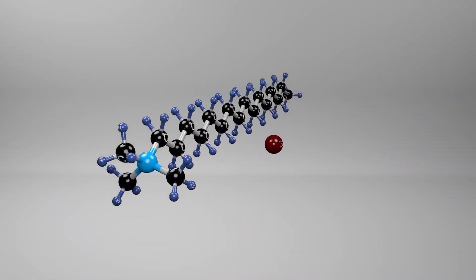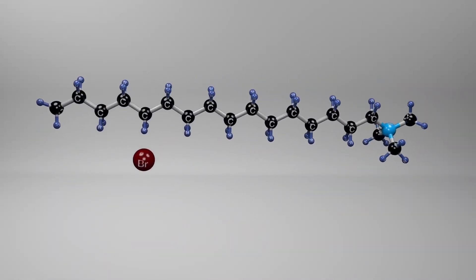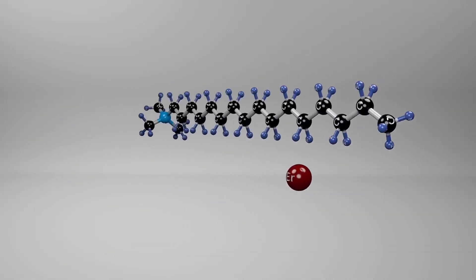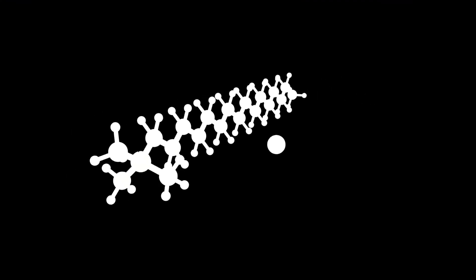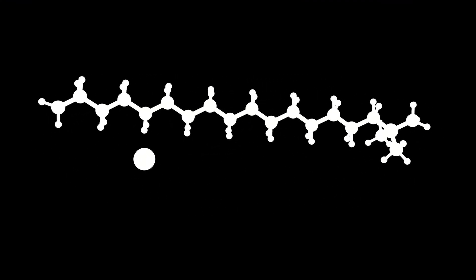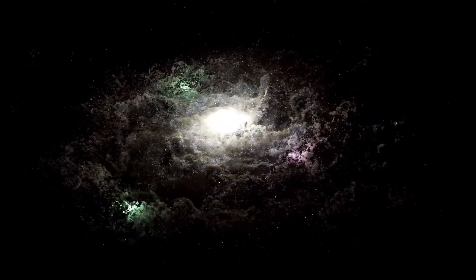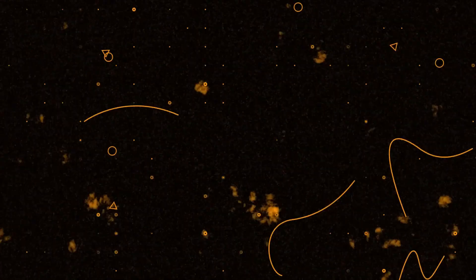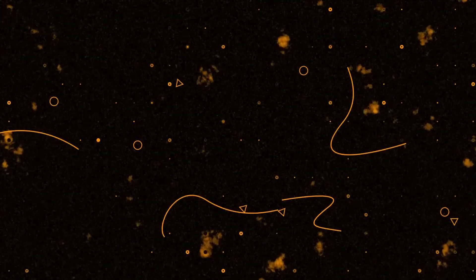Binding the universe together are cosmic filaments, enormous threads of gas, dust, and dark matter that stretch across billions of light-years. These filaments form a web-like structure that links galaxies and clusters into an intricate cosmic network. The universe's matter is not evenly distributed. Instead, it forms this delicate web of filaments and nodes where gravity gathers galaxies.